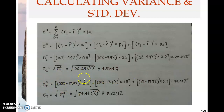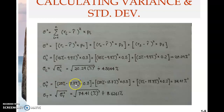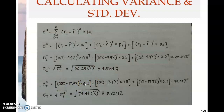The first component is about the outcome under boom economic state. The possible return is 25% for stock T minus the expected return which is 17.7%. You square that, then you multiply by 0.3, which is the probability of that boom state occurring — that's 30%.